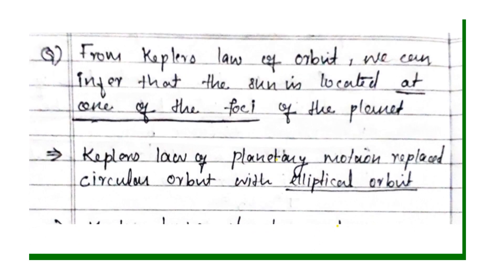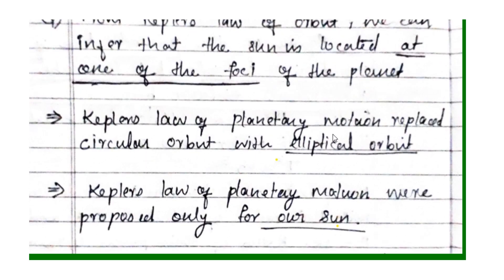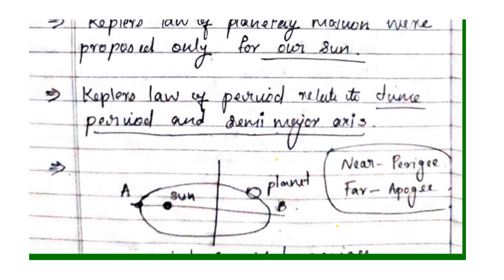Kepler's law of planetary motion replaced the circular orbit assumption. It was proposed originally for our Sun. Kepler's law of planetary motion relates the time period and the semi-major axis of a planet's orbit.